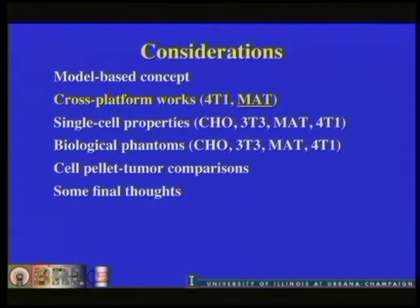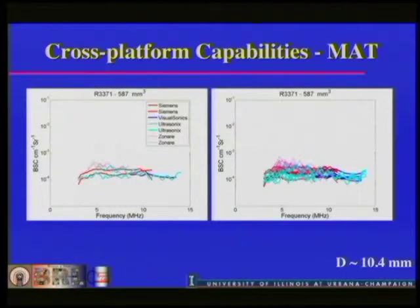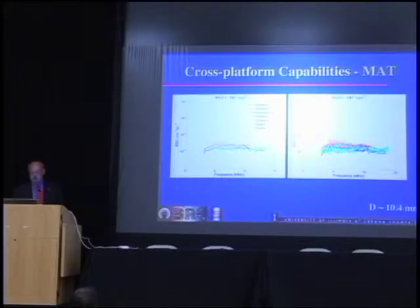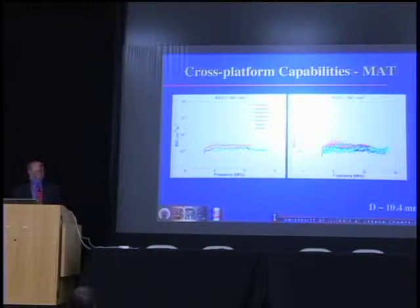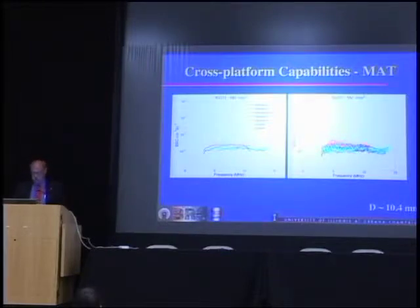The first thing I want to demonstrate is that cross-platform compatibility works. This is the backscatter coefficient as a function of frequency using four separate imaging systems imaging exactly the same tumor. The right image represents five realizations for each transducer of those imaging systems — they all group on top of one another. The left is the average of each. We have four systems: Siemens 2000, Visual Sonics 2100, Ultrasonics, and Zonare. We get even better results with physical phantoms, so the math is well figured out.